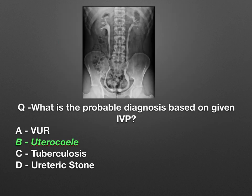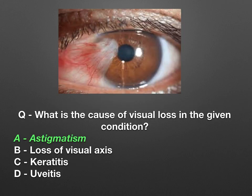Now the question is showing an IVP picture and asking for the probable diagnosis. The options are vesicouterine reflex, ureterocele, tuberculosis, and ureteric stone. The answer is of course ureterocele.